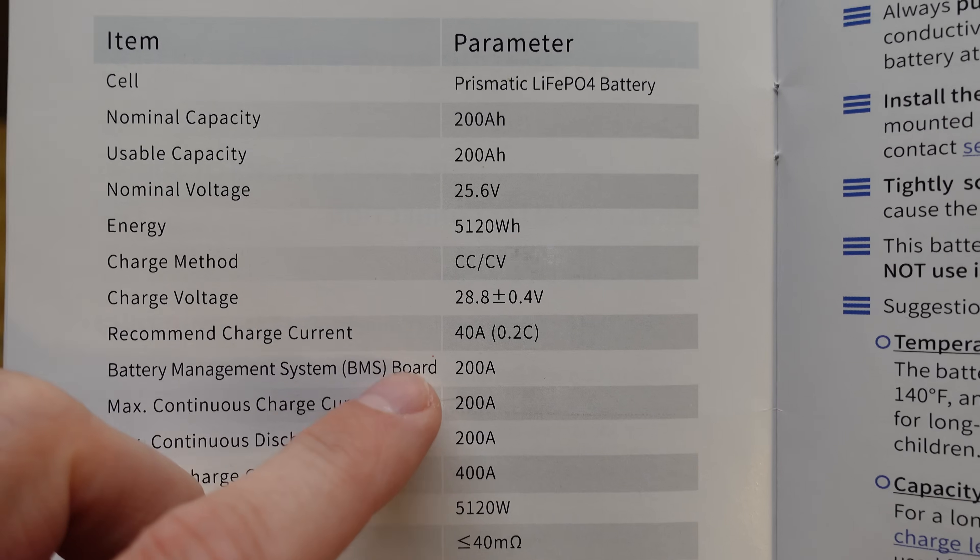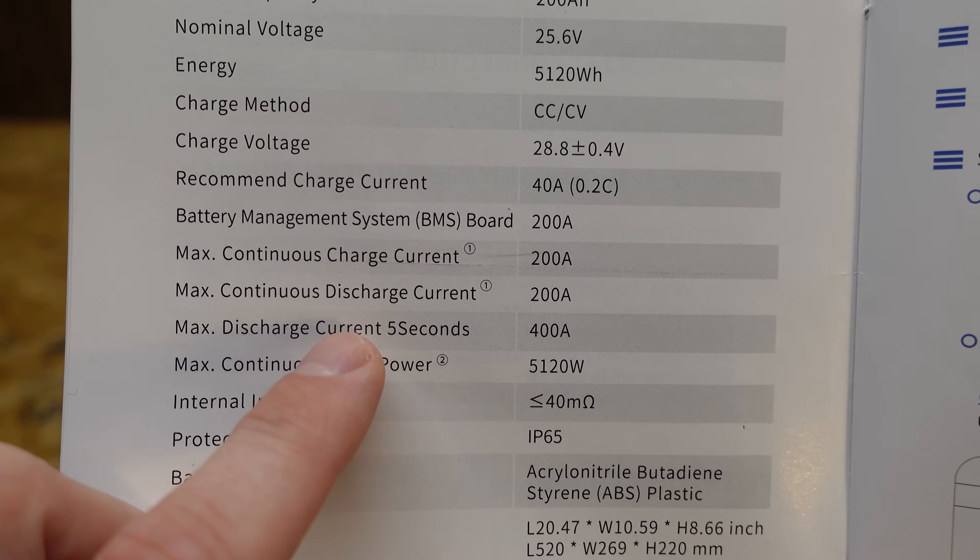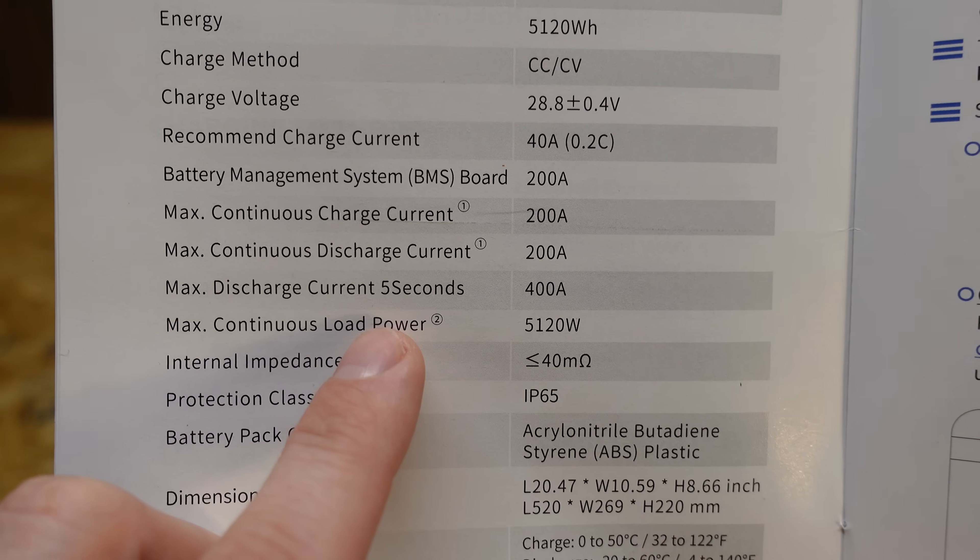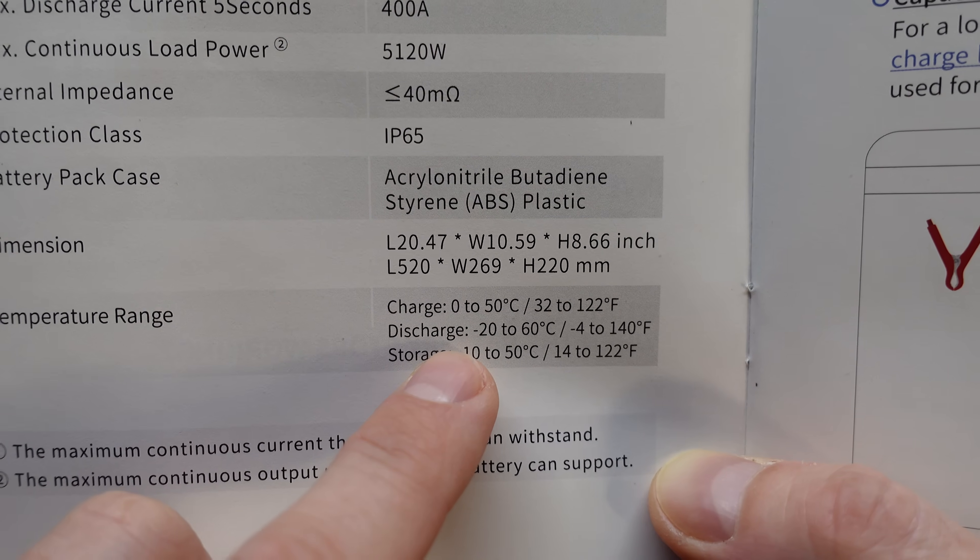So here are the battery specifications. 200 amp hours. Recommended charge is 40 amps. The maximum continuous charge and discharge is 200 amps. Max discharge is 400 amps for up to 5 seconds, so that's your peak rating. And you can charge it down to 0 degrees Celsius.